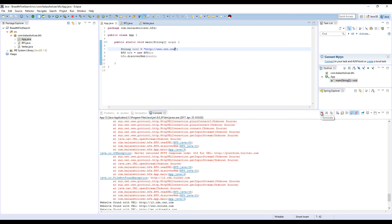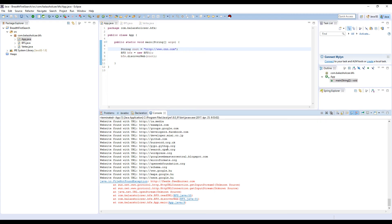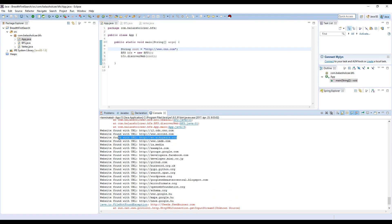As you can see, there are lots of websites available. For example, github.com, developers.facebook.com, and so on. Wikipedia, as you can see, imdb.com.